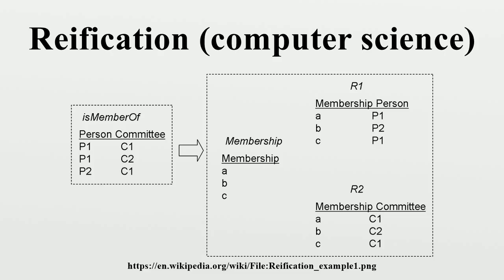The reified membership would be represented as: CommitteeMembership is an OWL Class; CommitteeMembership12345 is of RDF type CommitteeMembership; CommitteeMembership12345 has committee-of-person Person P1; CommitteeMembership12345 has committee-in-committee Committee C1; and Person P2 committee-nominated CommitteeMembership12345.